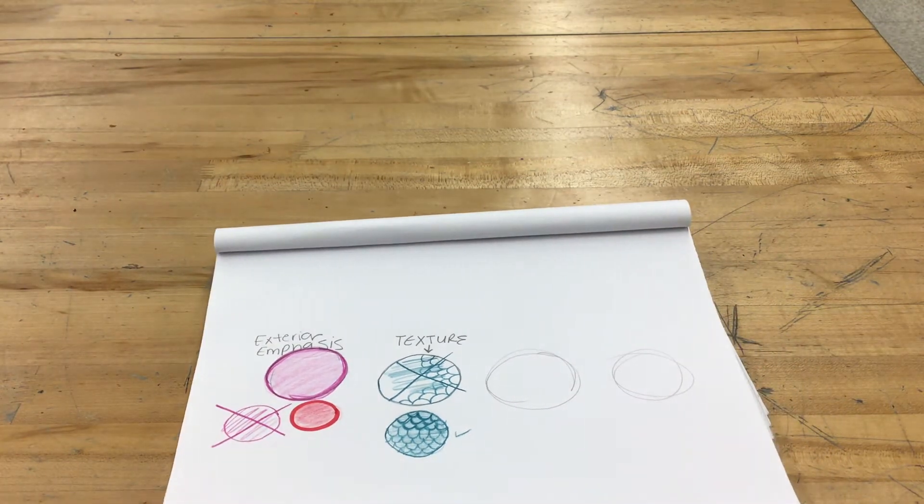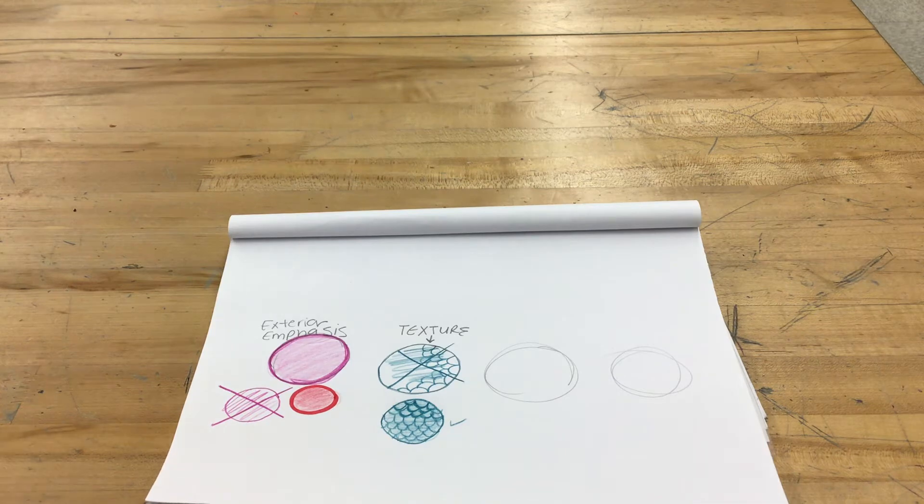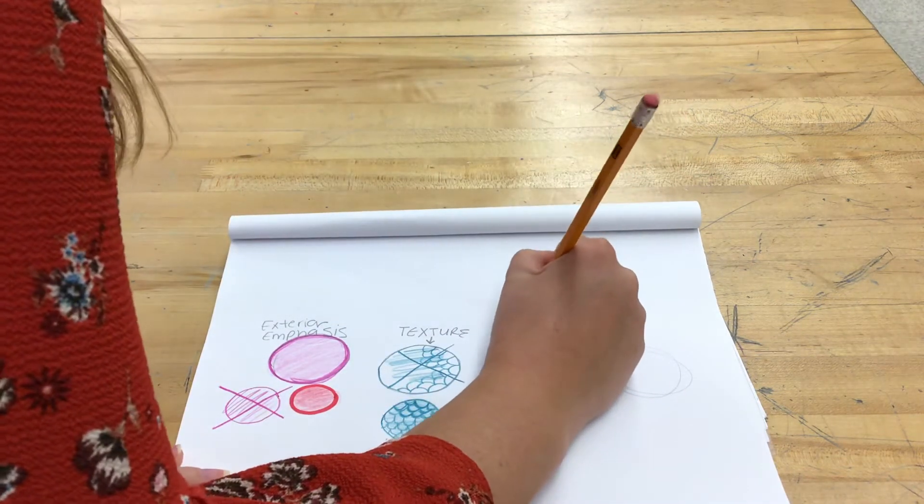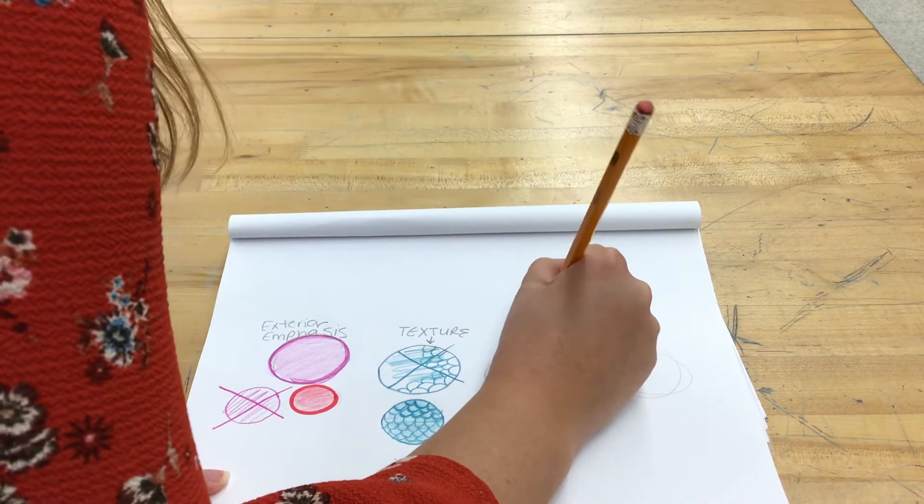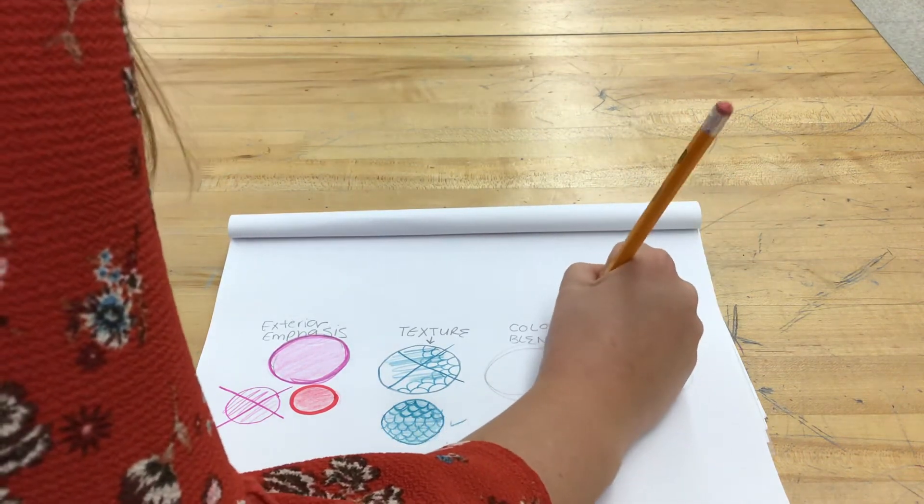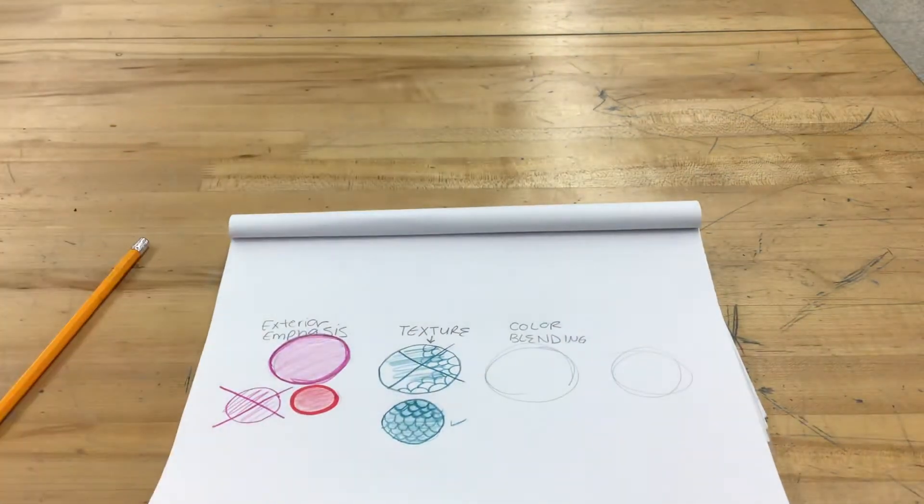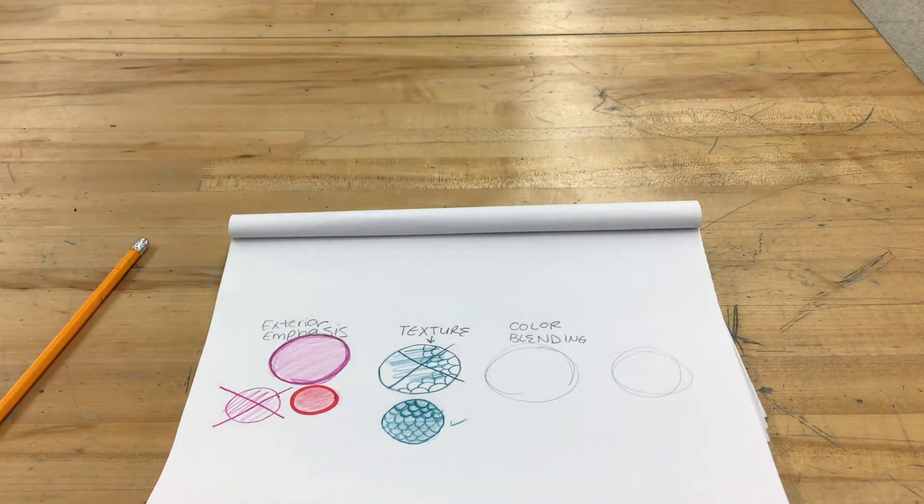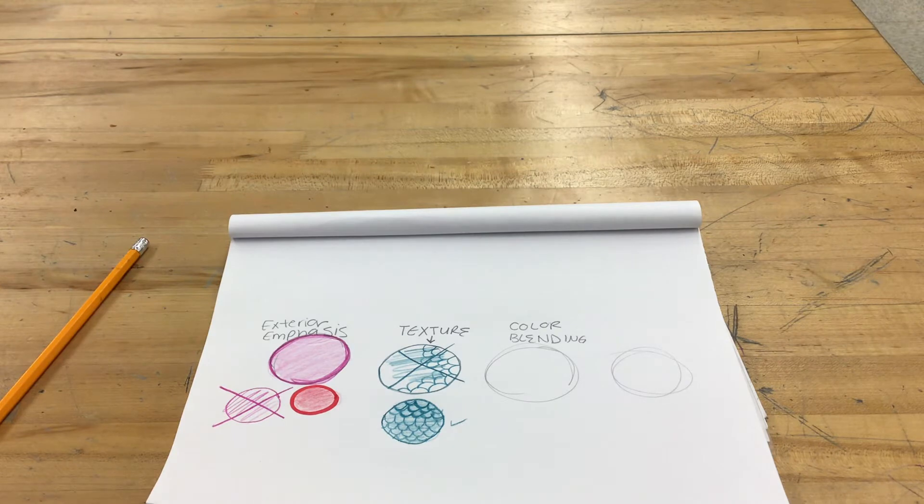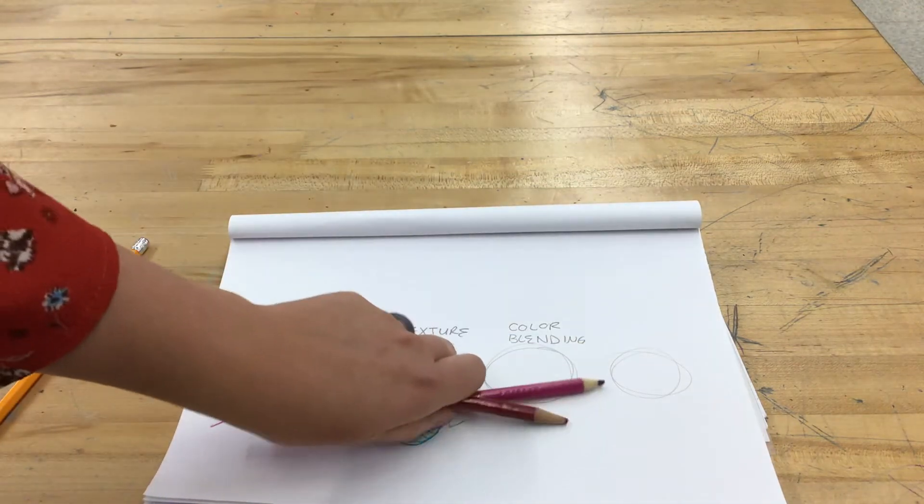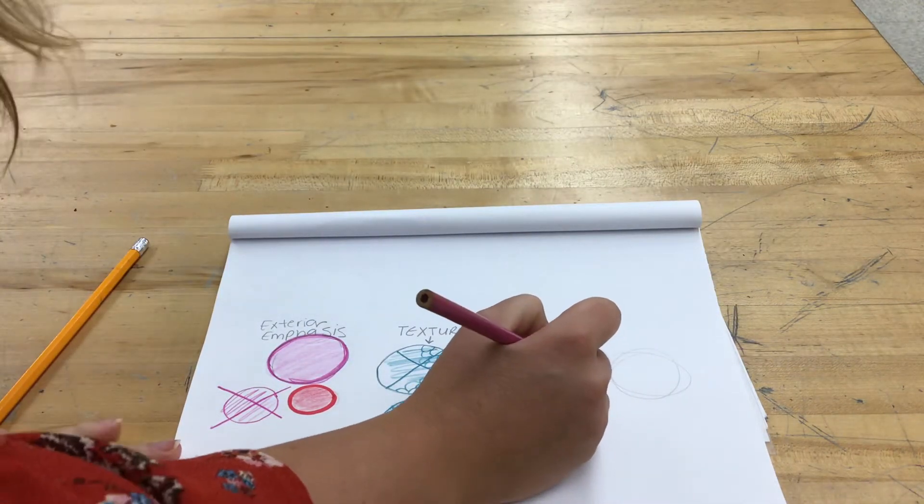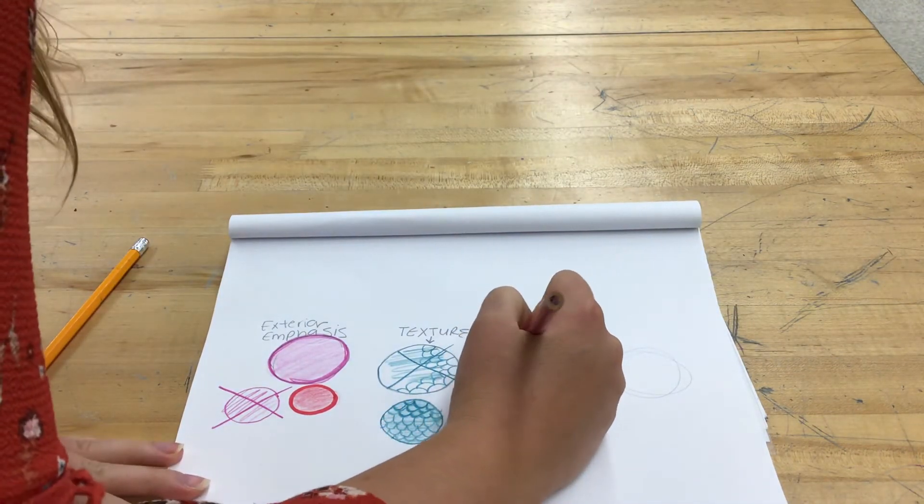The next coloring technique we are going to look at is color blending. So you need to label your next circle color blending. To color blend, you need to pick out two colors. I am going to use pink and red to color blend. I am going to outline the top half of my circle with my first color, which mine is pink.